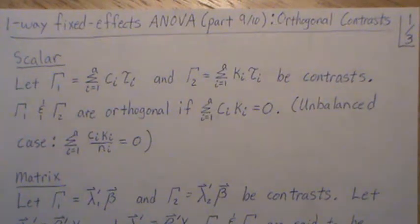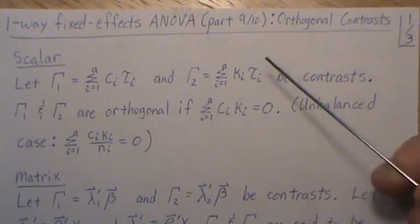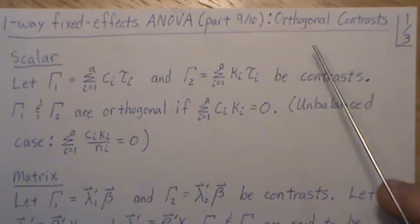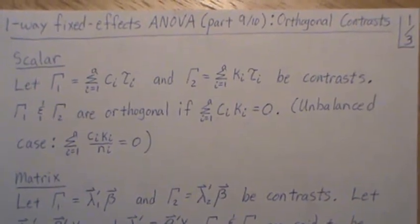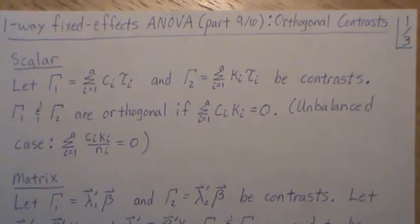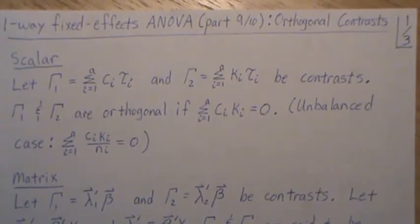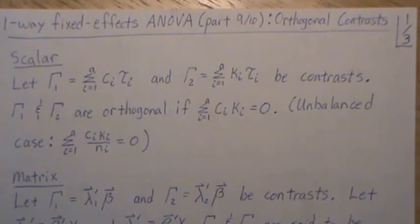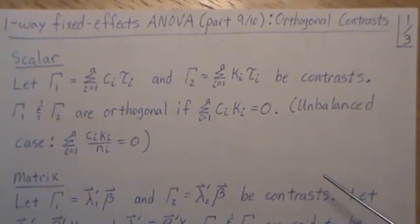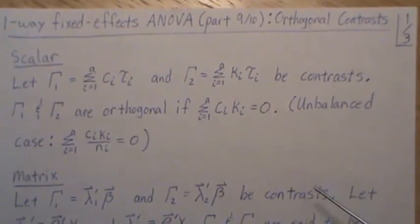Hello, this is the next video in a playlist titled General Linear Models: Design of Experiments. This is part nine of a 10-part mini-series on one-way fixed effects ANOVA. In this video we're going to look at orthogonal contrasts. In part seven we introduced contrasts, in part eight we looked at contrasts assuming the error component is normally distributed. Here we look at orthogonal contrasts, and in part ten we'll look at orthogonal contrasts that partition the sum of squares for treatment.